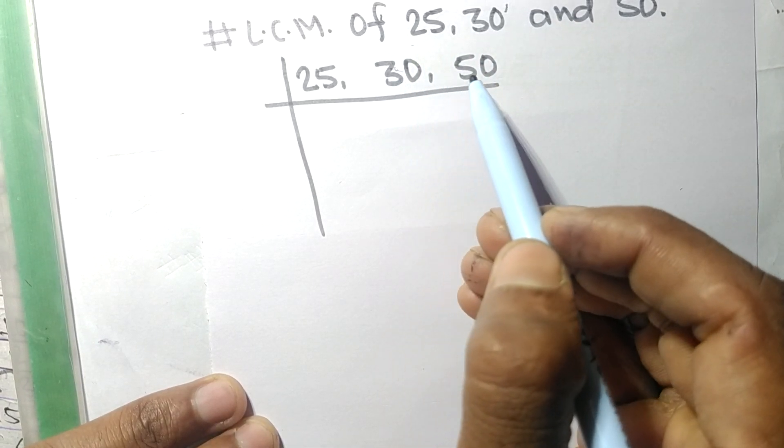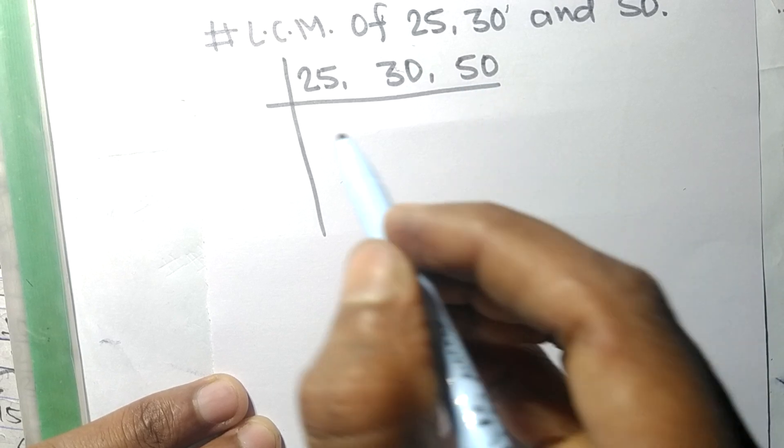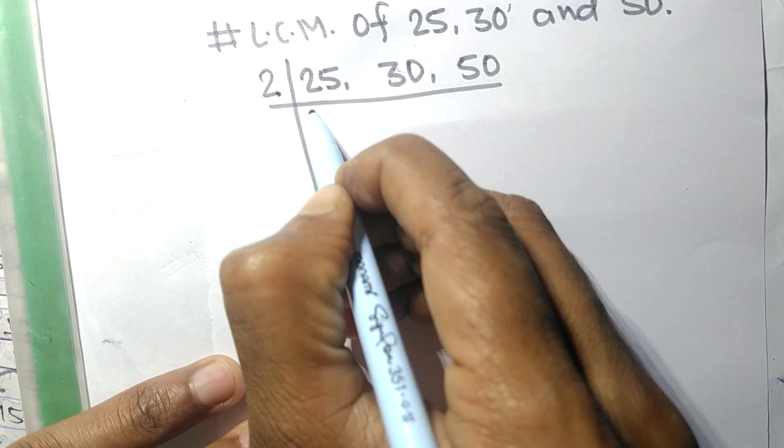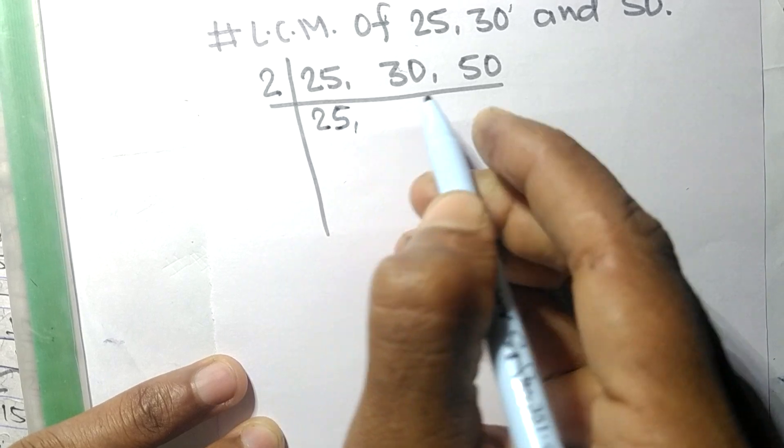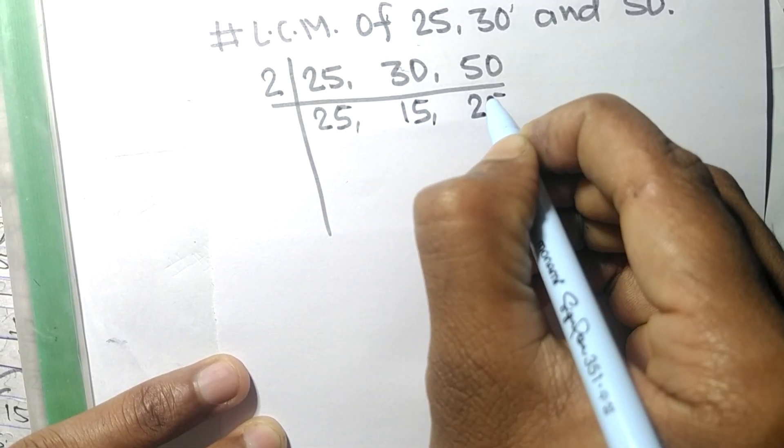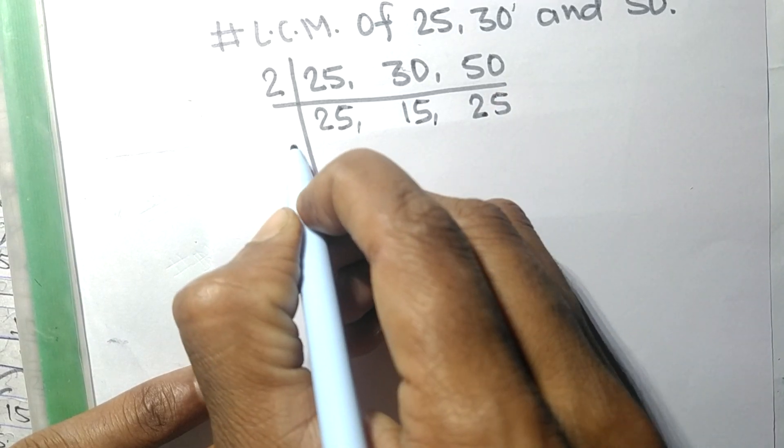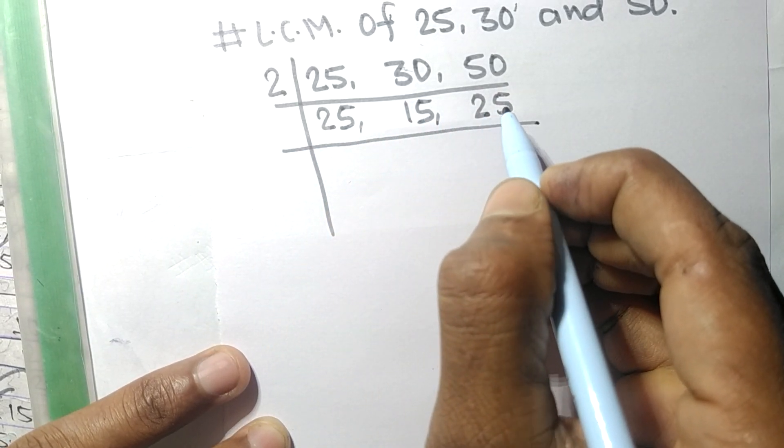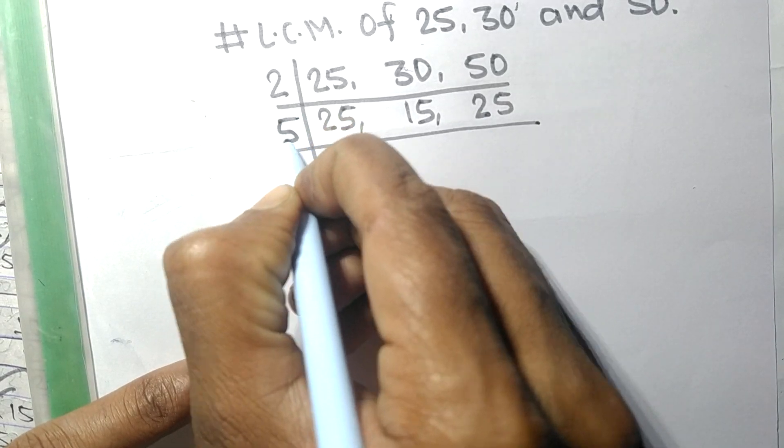So 30 and 50 are divisible by 2, 25 not divisible, so it is same. 2 times 15 means 30, 2 times 25 means 50.